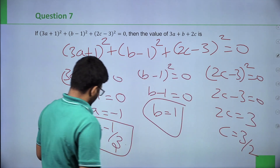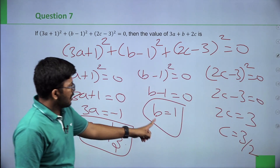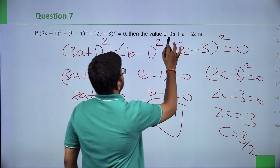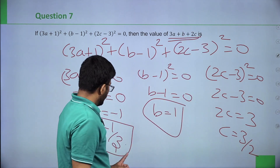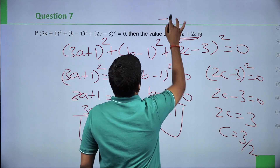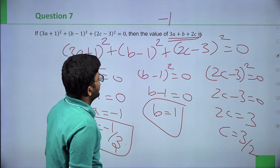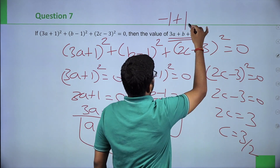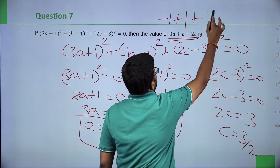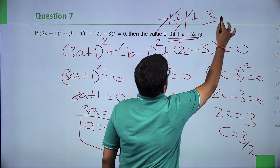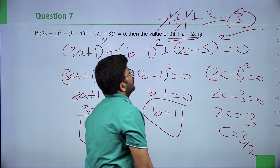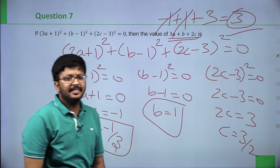With a = minus 1 by 3, b = 1, c = 3 by 2, we find 3a plus b plus 2c: 3 into minus 1 by 3 = minus 1, plus b = plus 1, plus 2c = 2 into 3 by 2 = 3. So minus 1 plus 1 cancel out, leaving 3. Therefore 3a plus b plus 2c equals 3.